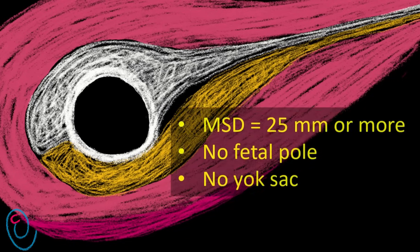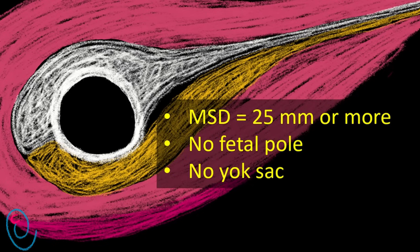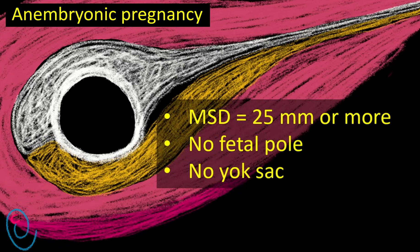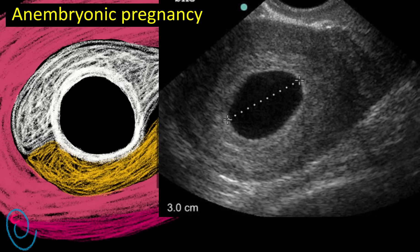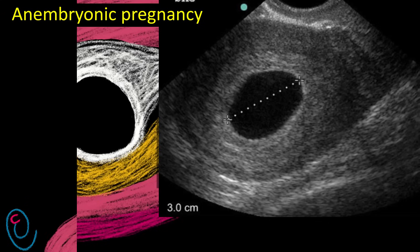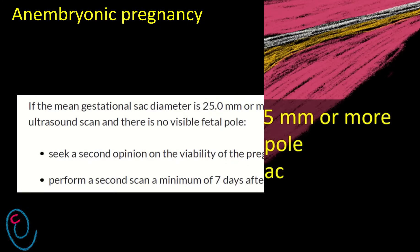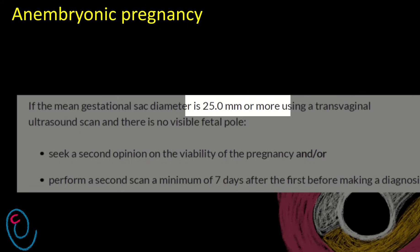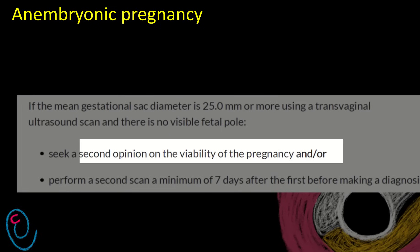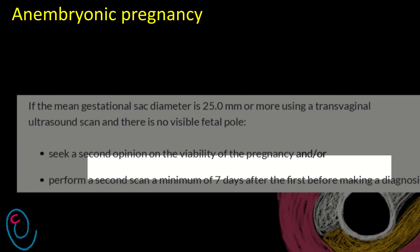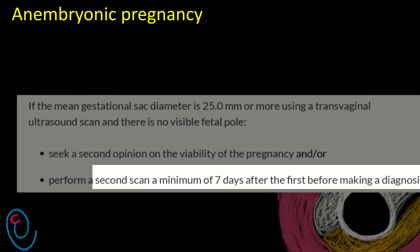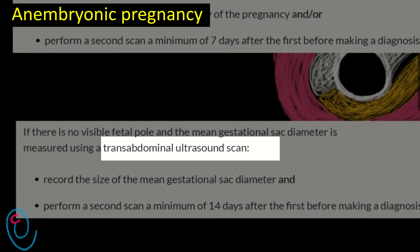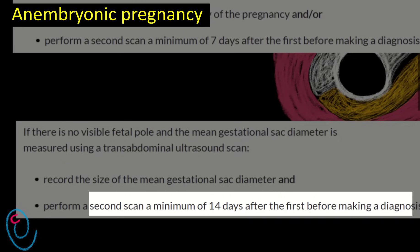The gestational sac will grow; however, if the mean sac diameter becomes 25 mm or more with no fetal pole or yolk sac, this is called an empty sac, also known as anembryonic pregnancy. The NICE guideline advises that if the mean sac diameter is 25 mm or more with no fetal pole on transvaginal ultrasound, ask for a second opinion and/or repeat the scan after seven days. If transabdominal ultrasound is used, repeat the scan after 14 days.